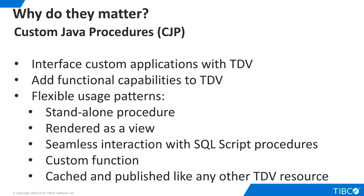Custom Java procedures are important to our customers for three reasons. First, they provide a way to connect TDV to custom applications that do not provide a standards-based API. Second, they enable customers to add functional capabilities to TDV, such as complex validation logic or other algorithms. Third, they allow Java code to be used in TDV in very flexible ways. CJPs may be used as standalone procedures or embedded in views. They can be called by TDV SQL script procedures and promoted to custom functions. Like any other TDV resource, CJPs may be cached and published.